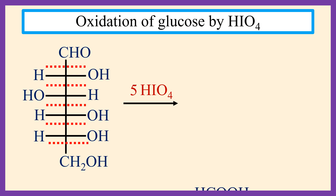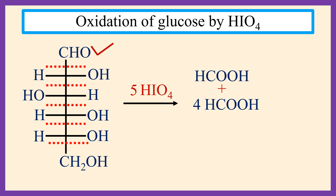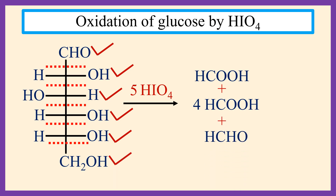This produces 1 molecule of formic acid for 1 CHO group, 4 molecules of formic acid for 4 CHOH groups, and 1 molecule of formaldehyde for 1 CH2OH group. Therefore, the ultimate products are 5 molecules of formic acid and 1 molecule of formaldehyde. Thank you for watching this video.